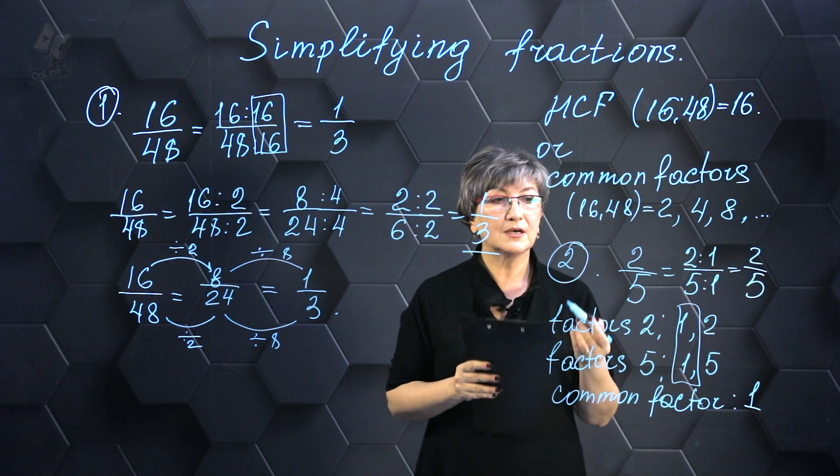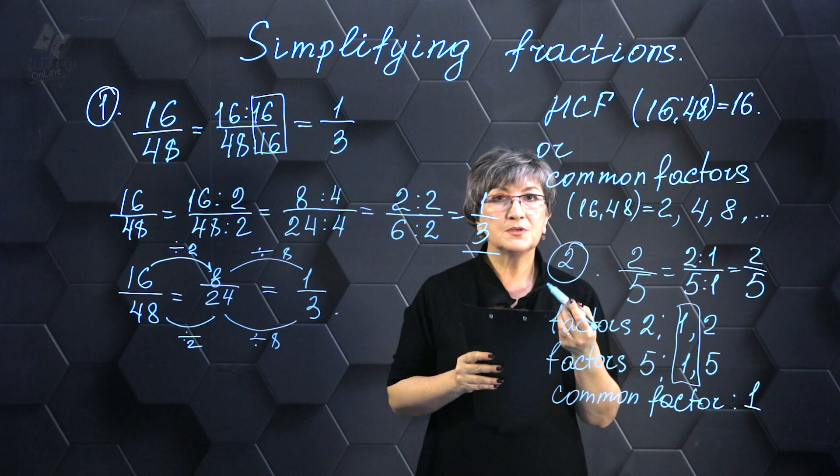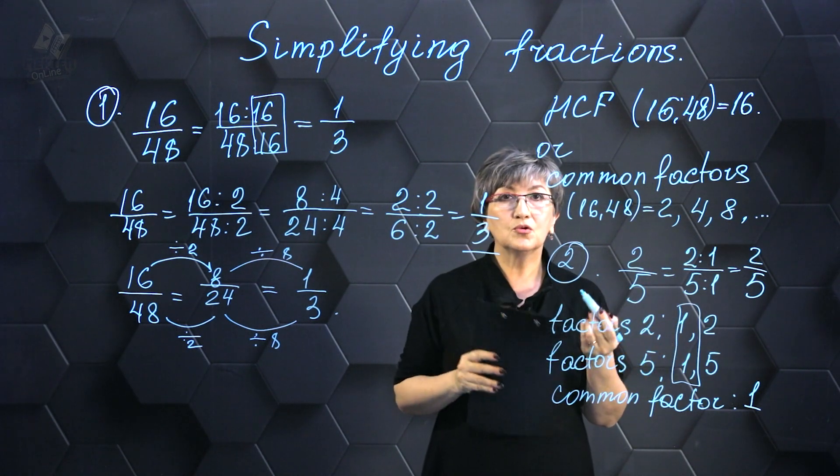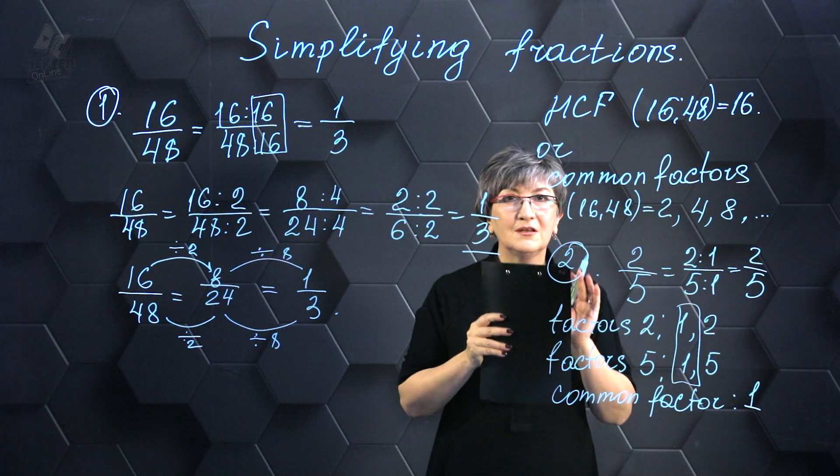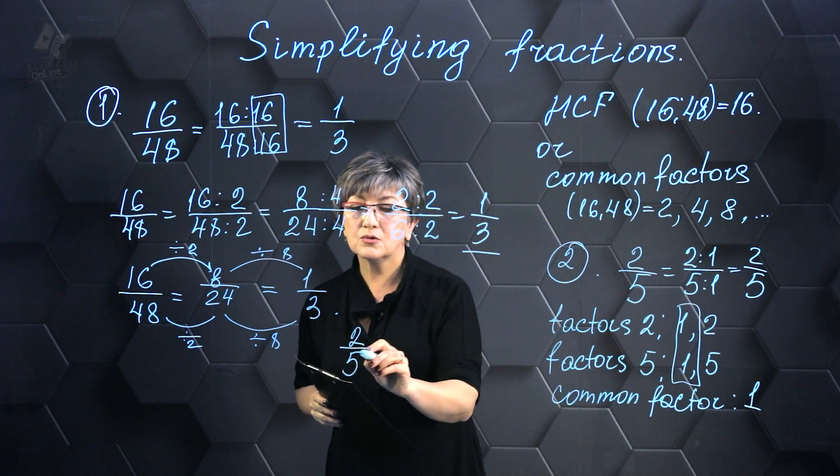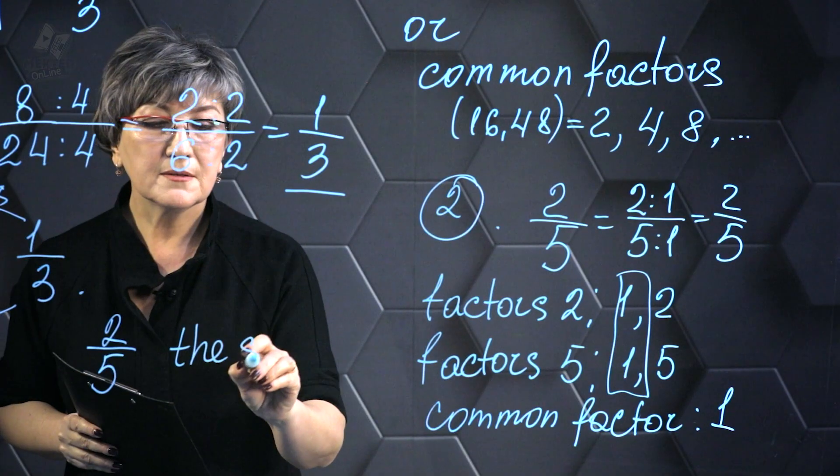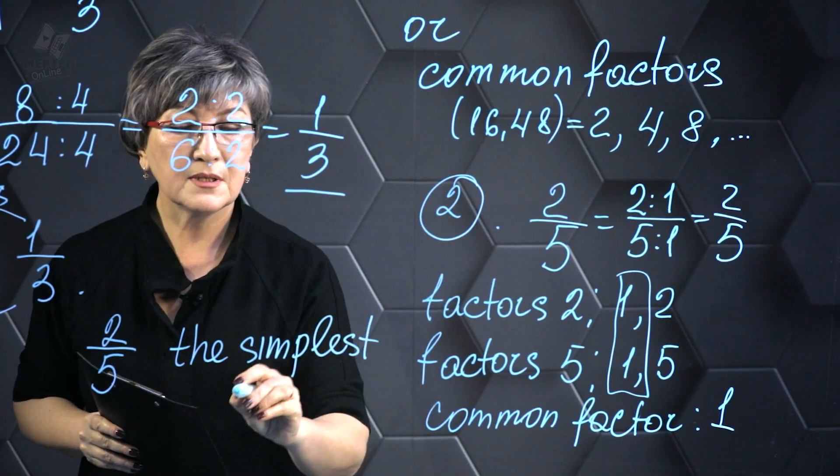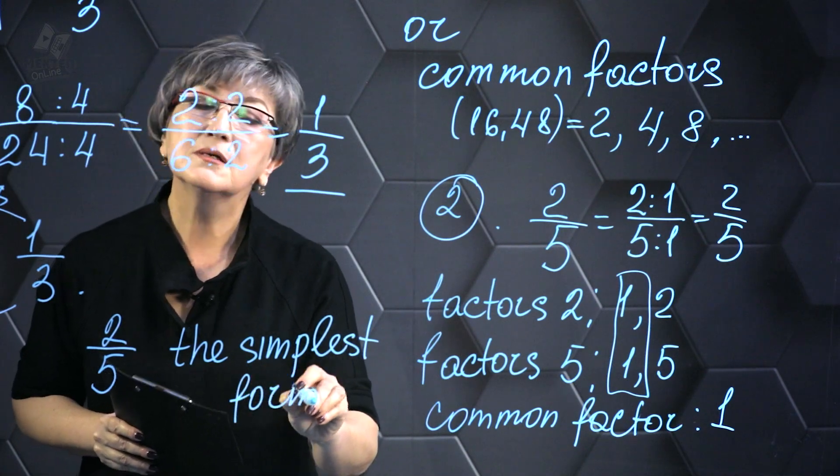Therefore, in cases where the common divisor is 1, it is not necessary to reduce this fraction. That is, the fraction 2/5 cannot be further simplified and is irreducible. This is a fraction that cannot be simplified.